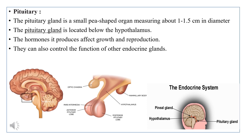The pituitary gland can also control the function of other endocrine glands, such as the thyroid gland, adrenal glands, ovaries, and testicles. Basically, the pituitary gland secretes hormones that affect growth and reproduction, and it also controls the functions of other glands in the endocrine system.